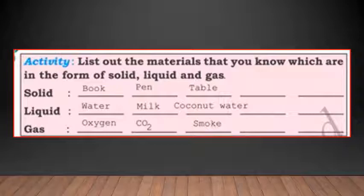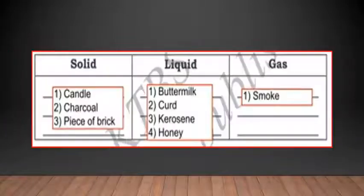Next also there is one small activity given. They have given few items and asked you to group it into solid, liquid, and gas. Options given are buttermilk, candle, curd, kerosene, charcoal, honey, piece of brick, smoke. Under solid: candle, charcoal, piece of brick. For liquid: buttermilk, curd, kerosene, honey. For gas: smoke.